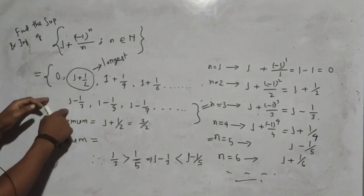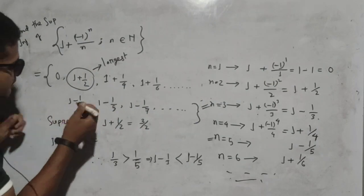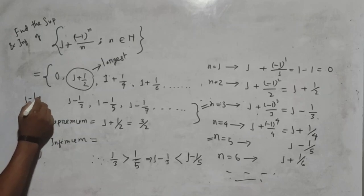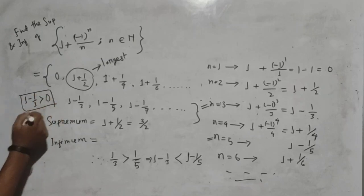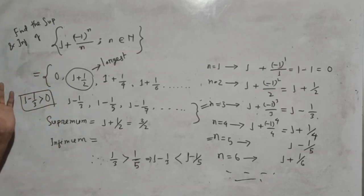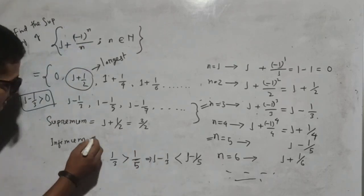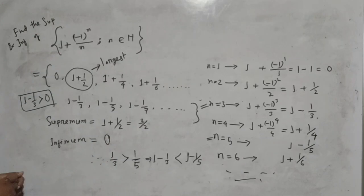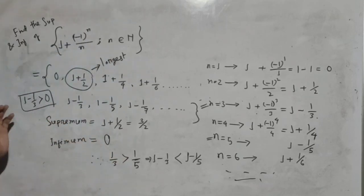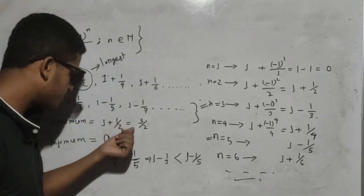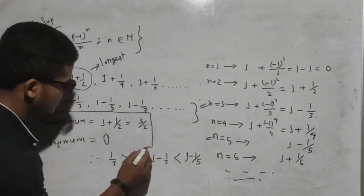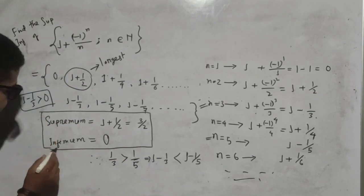This means the smallest element in the odd-indexed line is 1 minus 1/3, which is still a positive term greater than 0. So 0 is the smallest element in the entire set. Therefore, the infimum of this set is 0. So this is the supremum 3/2, and this is the infimum 0. Very simple, thank you very much.